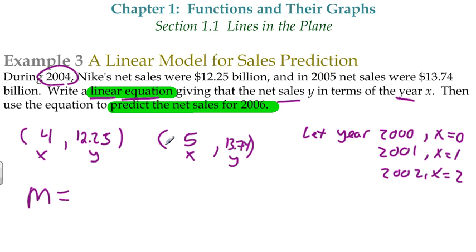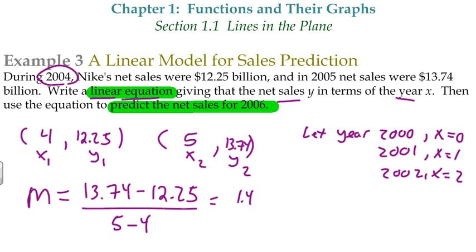This would be my x1, y1, x2, y2. Decimals, don't worry about it - you can do decimals with our calculator. So y2 minus y1, so 13.74 minus 12.25 over 5 minus 4. I'm going to get my calculator out. 13.74 minus 12.25 gives us 1.49 - that's what our slope is going to be. That's all over 1, so our slope is just simply 1.49.